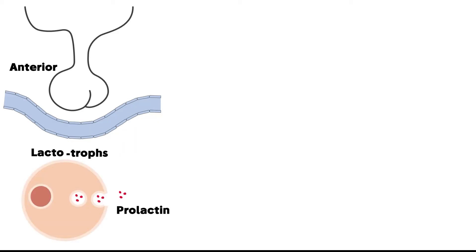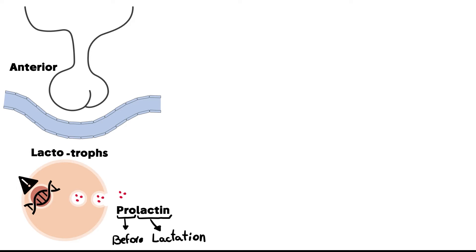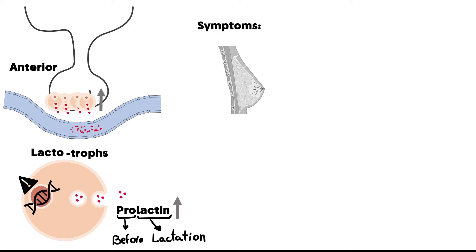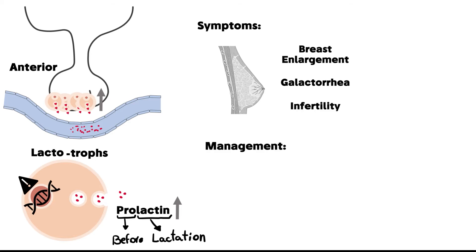Lactotrophs are the cells responsible for secreting prolactin. 'Pro' stands for before and 'lactin' stands for lactation — this is the hormone responsible for inducing lactation in women. If the DNA of this cell got mutated and turned into a cancer cell, it will undergo uncontrolled cell division, causing an increase in cell number and subsequently increased prolactin. This causes breast enlargement in both men and women, galactorrhea mostly in women, and infertility mostly in men.